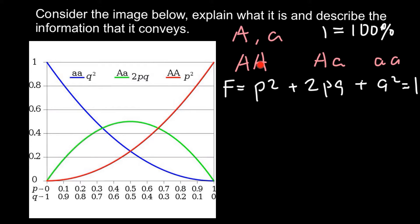In other words, using the letter A instead of p and q: A² (dominant) + 2Aa + a² equals the same formula. We just used different letters to represent these three genotypes. Of course, combining all three genotypes that can be made from two alleles equals 100% of all possible genotypes in a population.